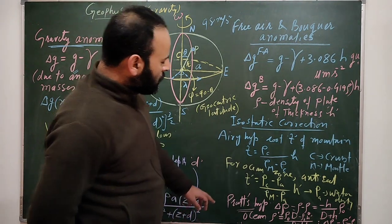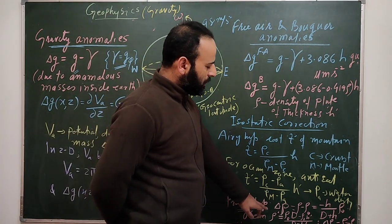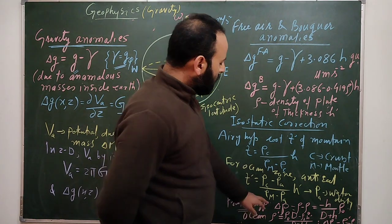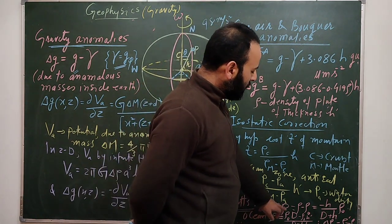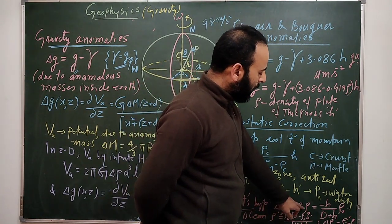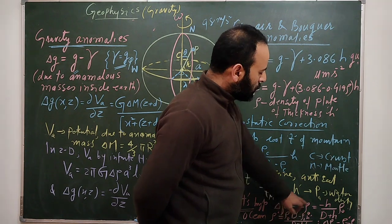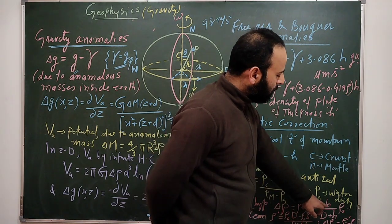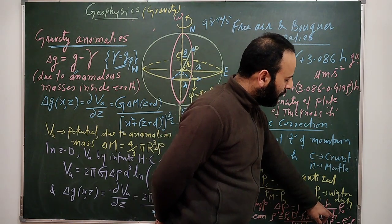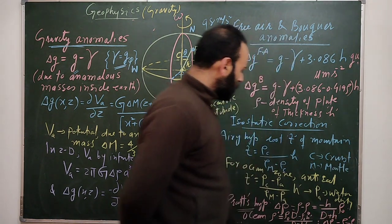The second theory is Pratt's hypothesis. According to Pratt, the variation in density is given by: ρ minus ρ₀ = −(h / (d + h)) · ρ₀, relating the density variation to the height h and compensation depth d.